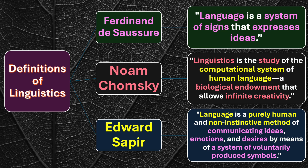A system of voluntarily produced symbols means there are symbols which are arbitrary. Humans have made those symbols happen in a particular way to represent certain sounds — they are not fixed. The symbols we produce are made through a system of voluntary efforts.